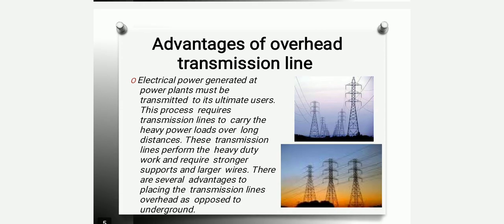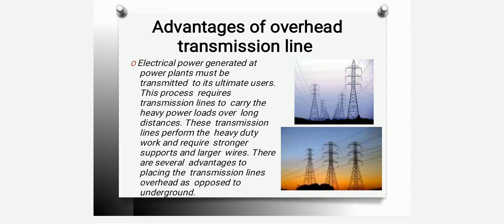The advantages of a transmission line include that electrical power generated at power plants must be transmitted to ultimate users. To carry heavy loads over longer distances, the transmission performs heavy-duty work and requires stronger supports and larger wires — the size of the conductor should be very large and proper insulation should be provided around that conductor.